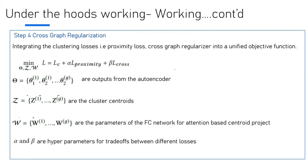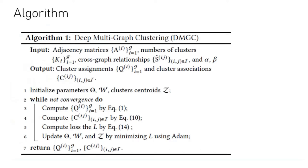Furthermore, the algorithm: this is the algorithm for deep multi-graph clustering. The inputs include adjacency matrix, number of clusters, cross-graph relationships if they exist, alpha and beta. The output is cluster assignments and cluster associations. We initialize theta, W, cluster centroids, and C. We go ahead until convergence: compute Q_I—that's the first step—compute C_IJ, then compute the loss, then update the parameters using Adam, and then return Q_I, which is the cluster assignment, and the cluster association.